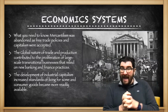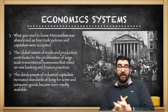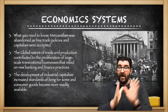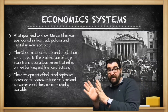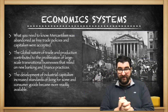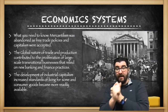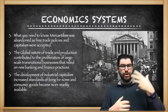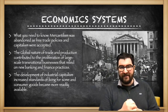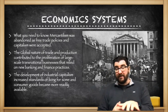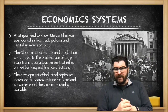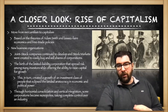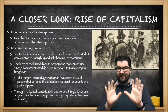Now let's look at some of the economic systems that developed during this industrial age that helped Western Europe grow into a dominant industrial and economic force. We see a move from mercantilism to free market capitalism, and the global nature of trade and production contributing to the growth of what we call transnational businesses that rely on new types of banking and finance practices. The development of industrial capitalism is going to increase the standard of living of some in Western Europe and around the world as consumer goods become more readily available.